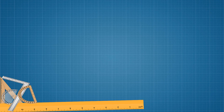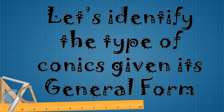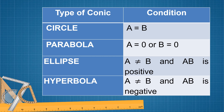Now we're going to discuss how to identify the type of conics given its general form. We need to identify the values of A and B. A is the numerical coefficient of x squared, while B is the numerical coefficient of y squared. If A equals B, that is a circle. If A equals 0 or B equals 0, it is a parabola. If A is not equal to B but AB is positive, that is an ellipse. If A is not equal to B and AB is negative, that is a hyperbola.